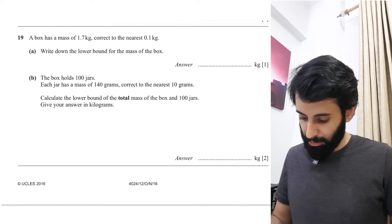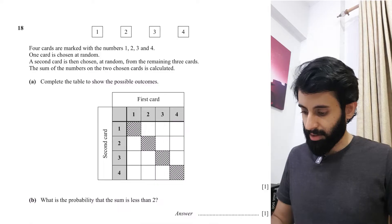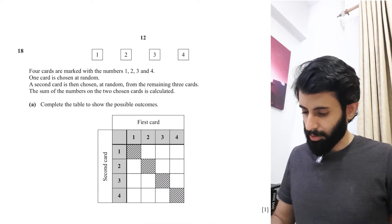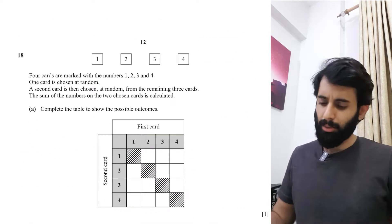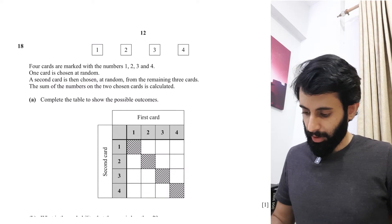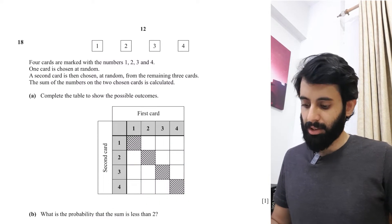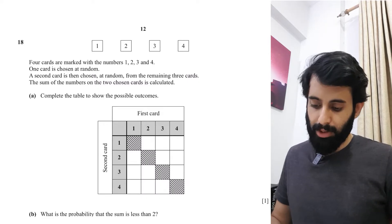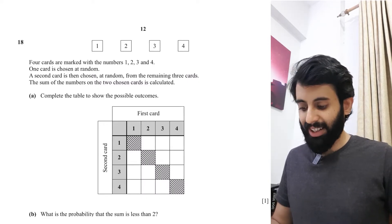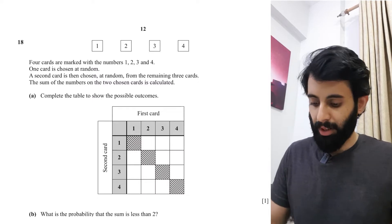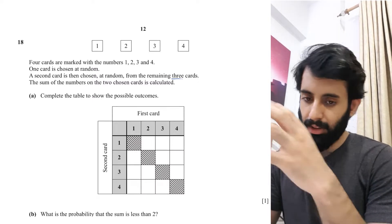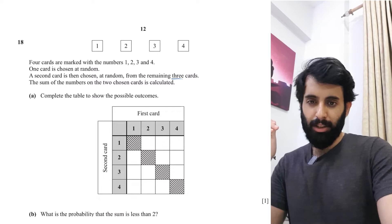This is a past paper question from October/November 2016, Paper 1 Variant 2. Probability can come in either paper one or paper two. The question says: four cards are marked with the numbers one, two, three, and four. One card is chosen at random, then a second card is chosen at random from the remaining three cards.